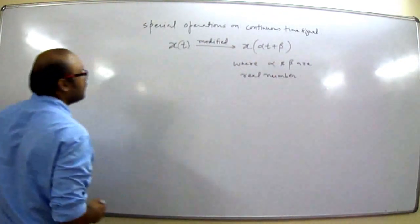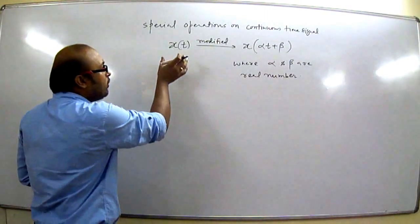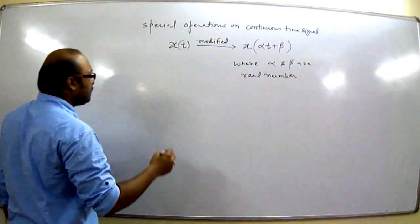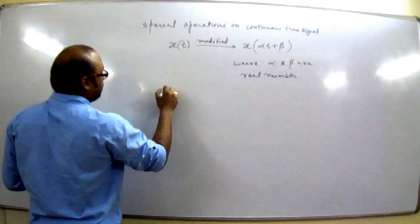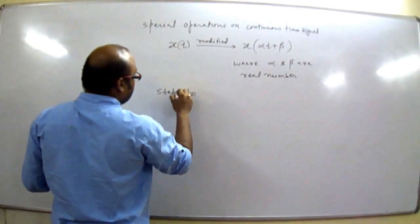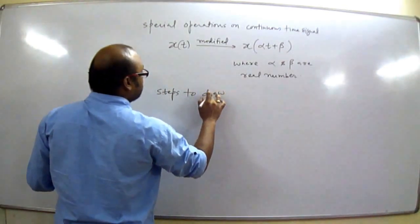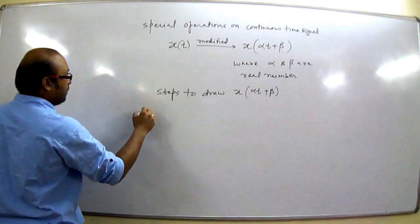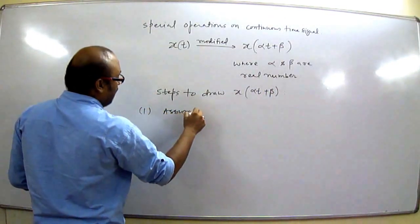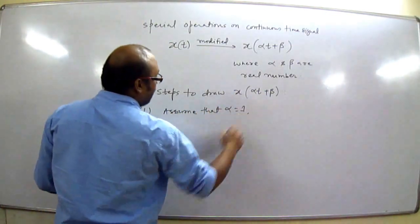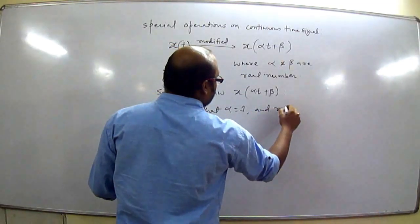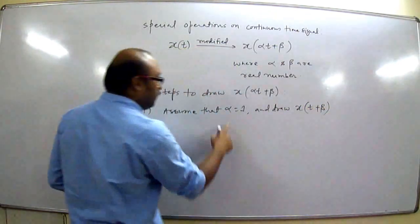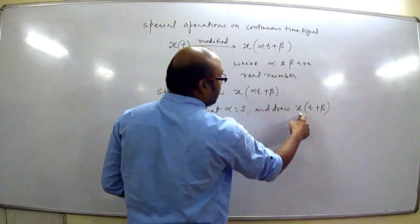Now to modify x(t) in the form of x(αt + β), we will have to follow certain steps. Steps to draw x(αt + β): first step, assume that α is 1 and draw x(t + β).